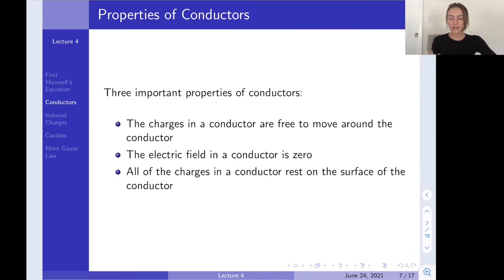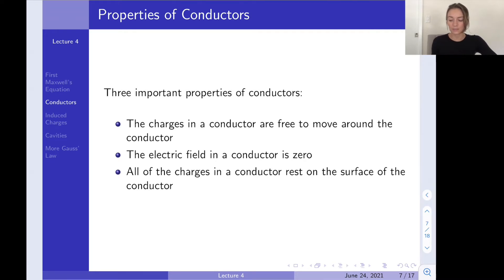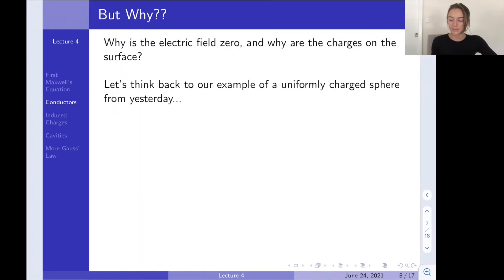There are three important properties of conductors you should memorize. First, the charges in a conductor are free to move around. Second, the electric field inside a conductor is always zero in electrostatics — when we do electrodynamics that won't always be true, but for electrostatics it is always zero. Third, the charges inside a conductor rest on the surface of the conductor.